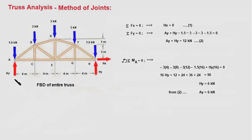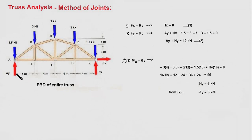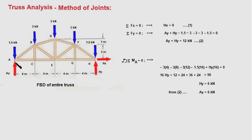To determine the reaction forces at the supports, we make a free body diagram of the entire truss. Because we have a roller support at point A, there is just one reaction force in the vertical direction, AY. Because we have a pin support at H, we have two forces HY and HX in the vertical and horizontal directions. We use the equilibrium equations: summing forces in the X direction gives HX equal to zero.